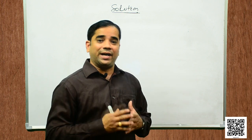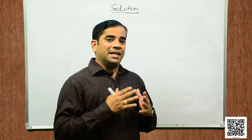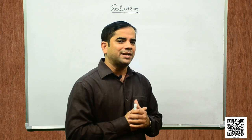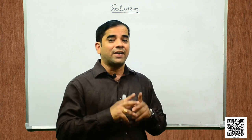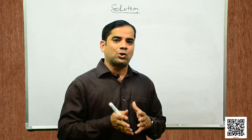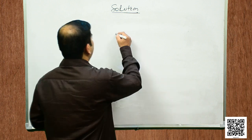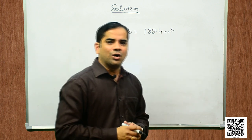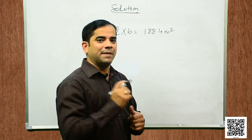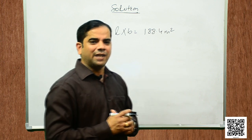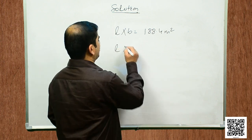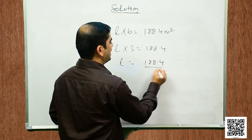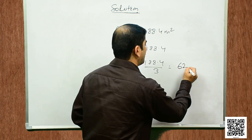The area of the tent is equal to the area of the tarpaulin sheet. The tarpaulin sheet is in the form of a rectangle, so its area equals length × breadth = 188.4 square meters. The breadth is given as 3 meters, so length × 3 = 188.4, which gives length = 188.4 ÷ 3 = 62.8 meters.